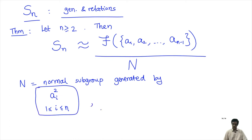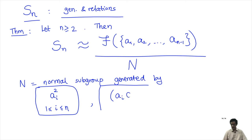The second collection of elements is like the (ab)³ relation we had in S3. That is, for each generator ai, we take its adjacent generator a(i+1) and look at (ai · a(i+1))³. Here i can go from 1 up to n−2.